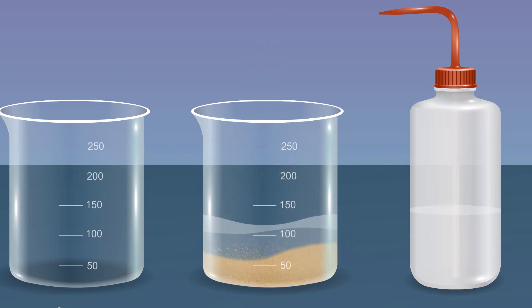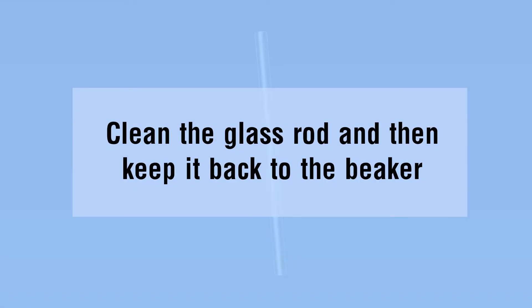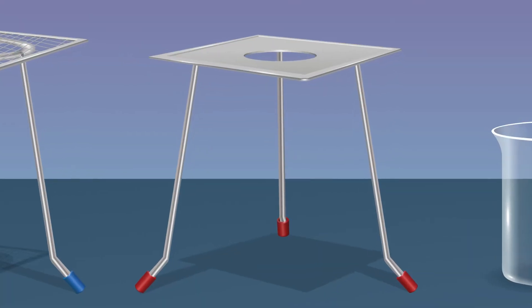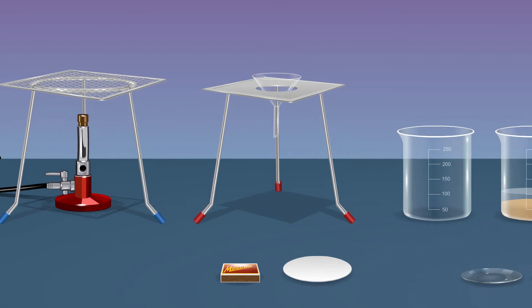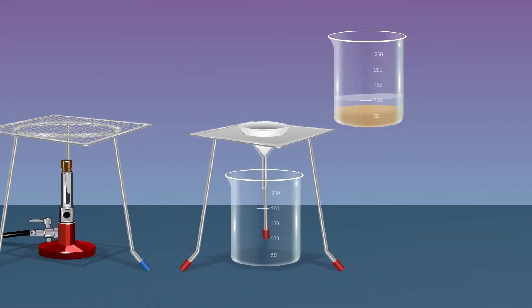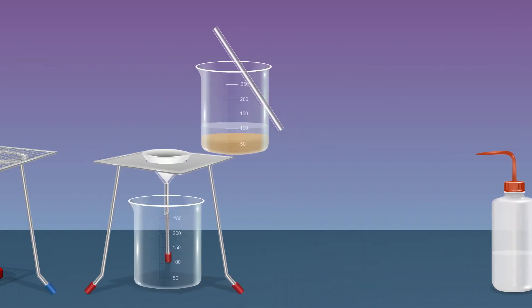Place a tripod stand. Keep the funnel in the tripod stand. Fold the filter paper and place it inside the funnel. Filter the content with the help of the funnel and filter paper.